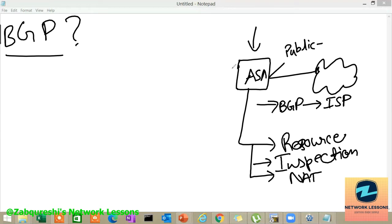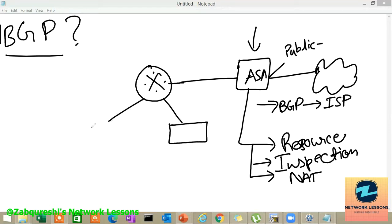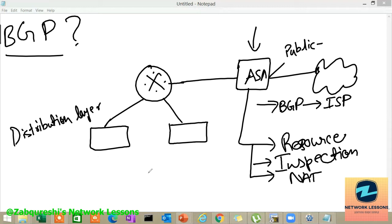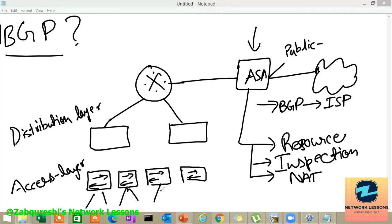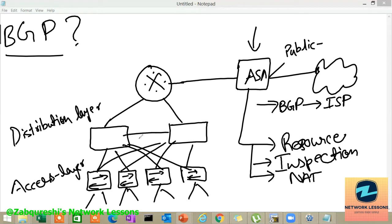So that can be done, and then you have the corporate router, and then you can have your distribution switches. Let's say we have a redundant connection, so we have an HA setup of our distribution switches — that's our distribution layer. Below the distribution layer we have the access layer, so we can have multiple access switches there. Below that you will have your end devices, and the connectivity would look something like this.